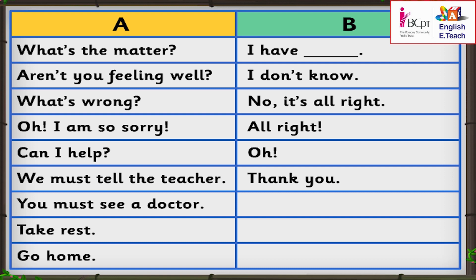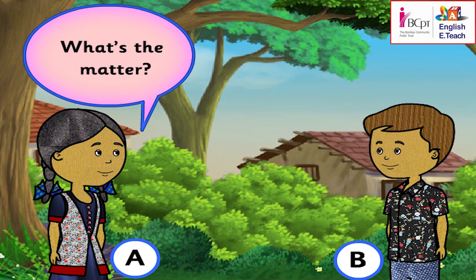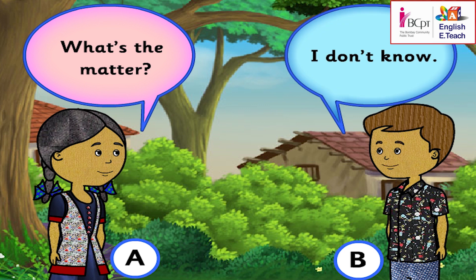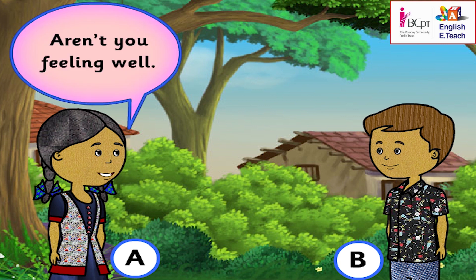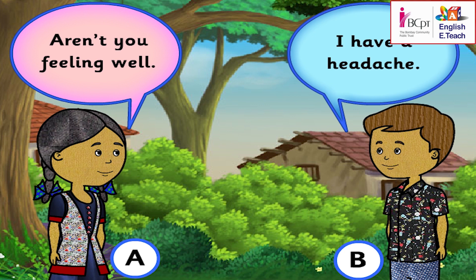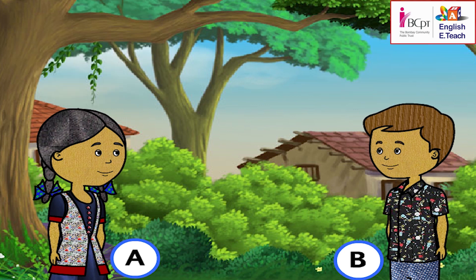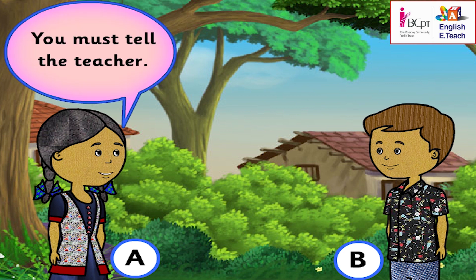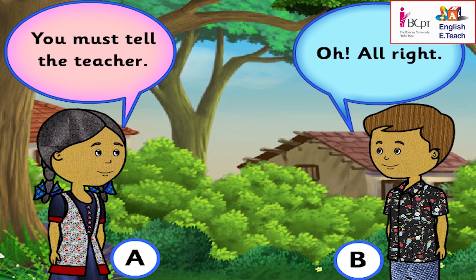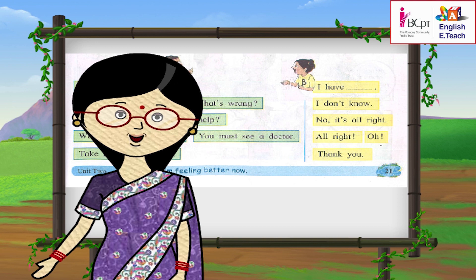Ruchi and Samir, please read your dialogue. A: What's the matter? B: I don't know. A: Aren't you feeling well? B: I have a headache. A: You must tell the teacher. B: Oh, alright. Good, Ruchi and Samir.